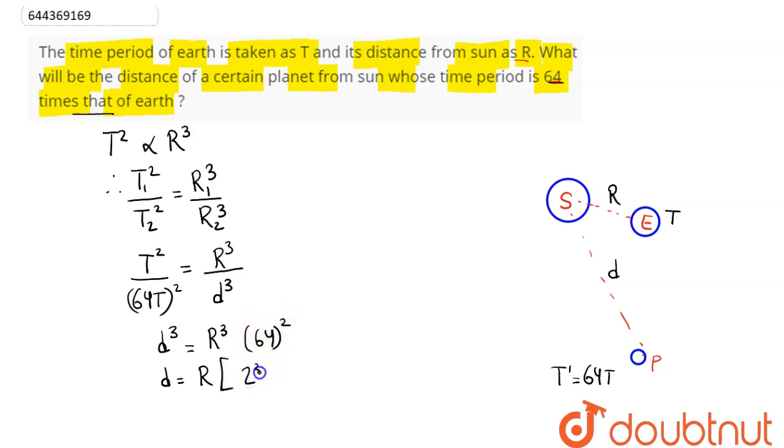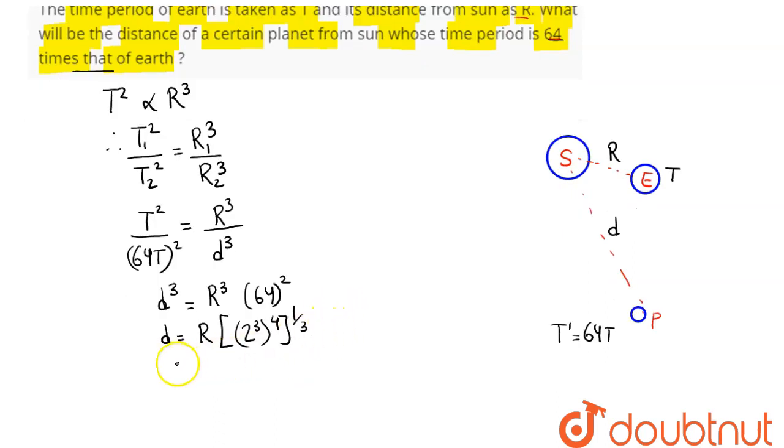That is power 4, and this is cube root of this. Hence on calculation this comes out as d equals 2⁴ into R